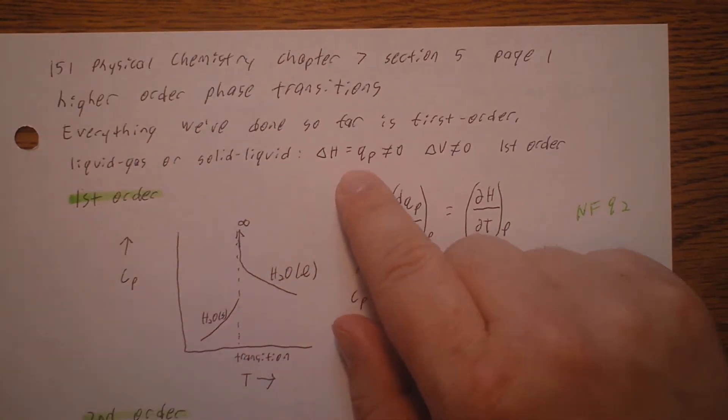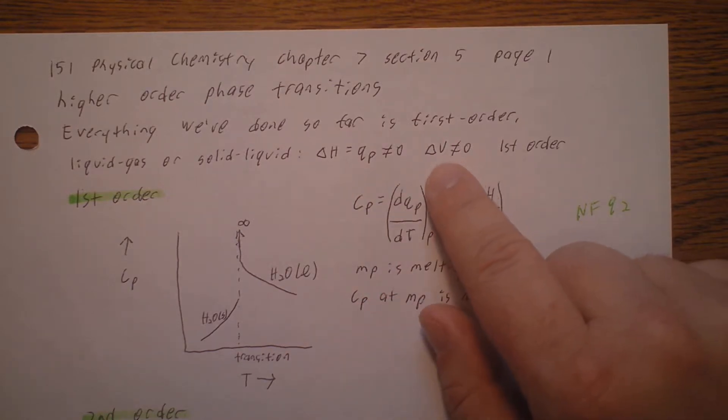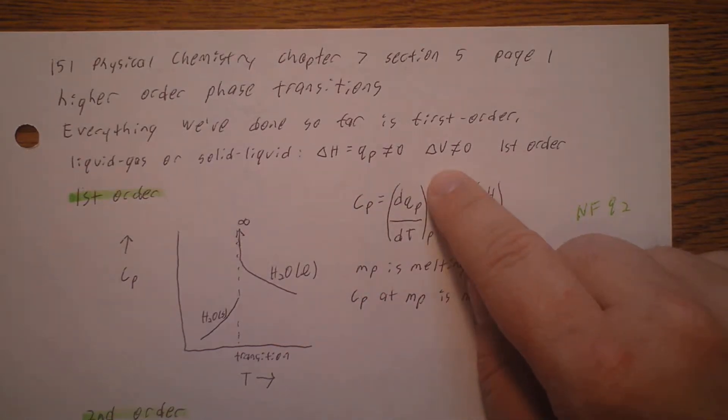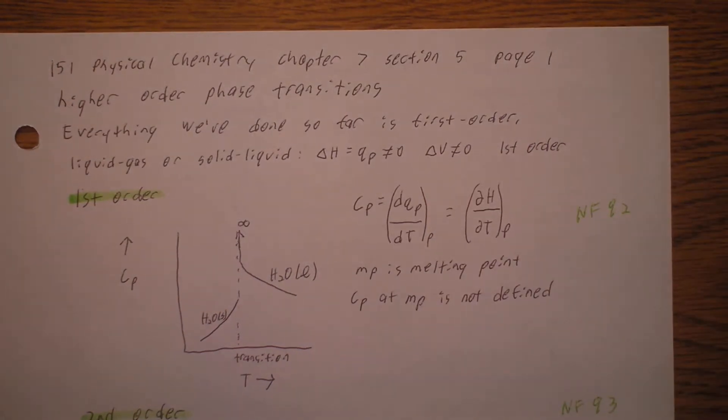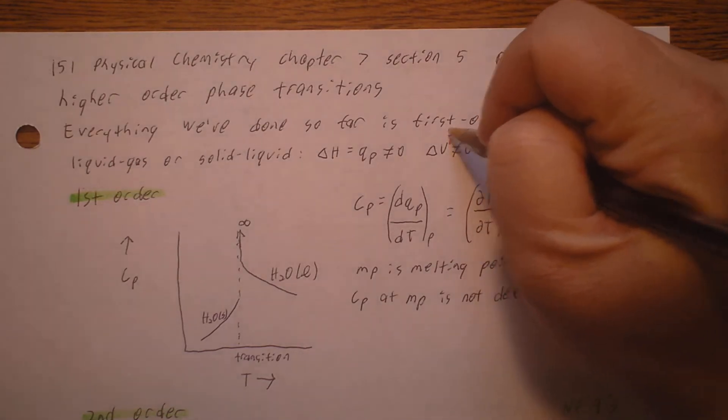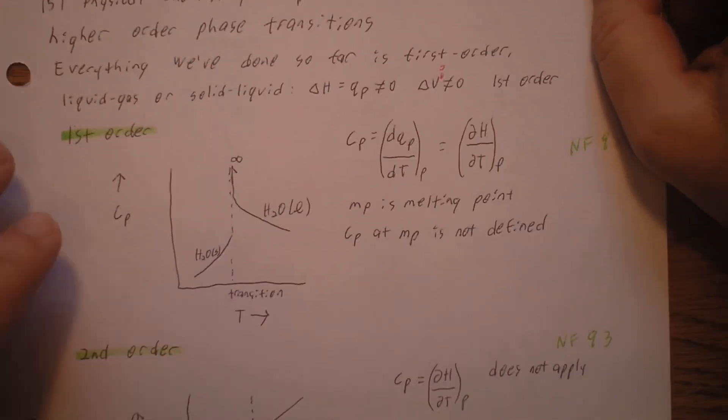Like a liquid-gas or solid-liquid. We said the change in enthalpy is equal to QP, which is not equal to zero. And the change in internal energy, I think, is that internal energy or volume? I can't read my own handwriting. I think that's supposed to be energy. That's a first order.